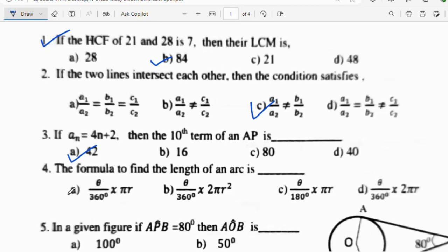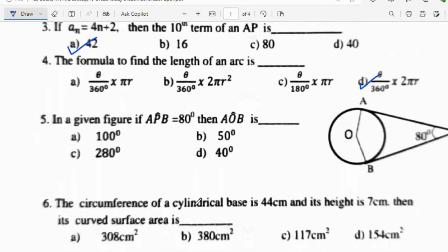Fourth question: The formula to find the length of an arc is. To find the length of an arc, we use theta by 360 into 2πr, option B is the right answer. Fifth question: If angle APB is equal to 80 degree, then AOB is dash.